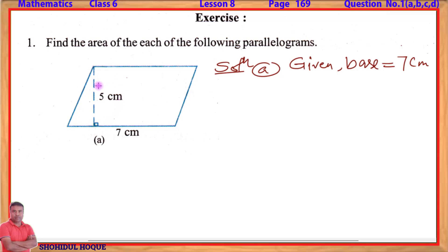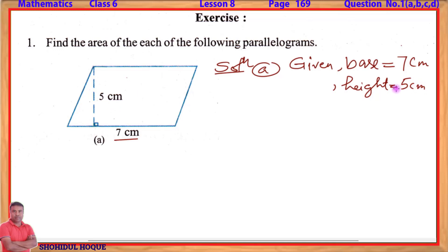Now, which line is the height? The height is the perpendicular line — the one with the box symbol indicating 90 degrees. That perpendicular line is the height, while the base side is the bottom side. So base = 7 cm, and height = 5 cm.